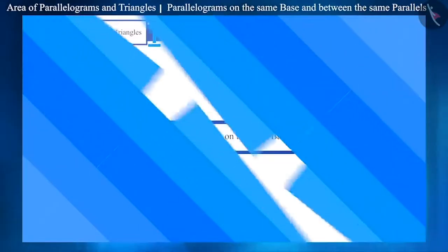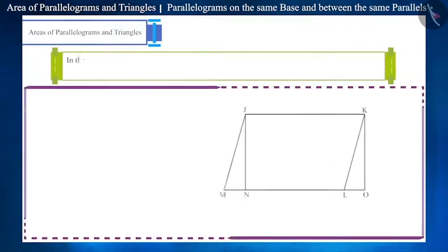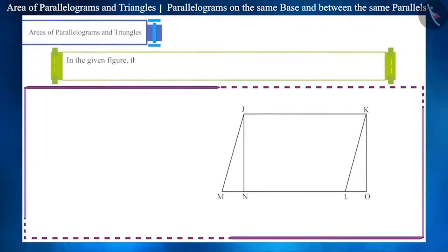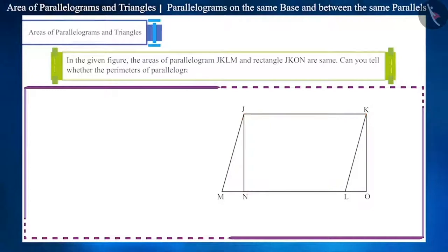So let's start with the first question. In the given figure, the areas of parallelogram JKLM and rectangle JKON are same. Can you tell whether the perimeters of parallelogram JKLM and rectangle JKON will be same or not?